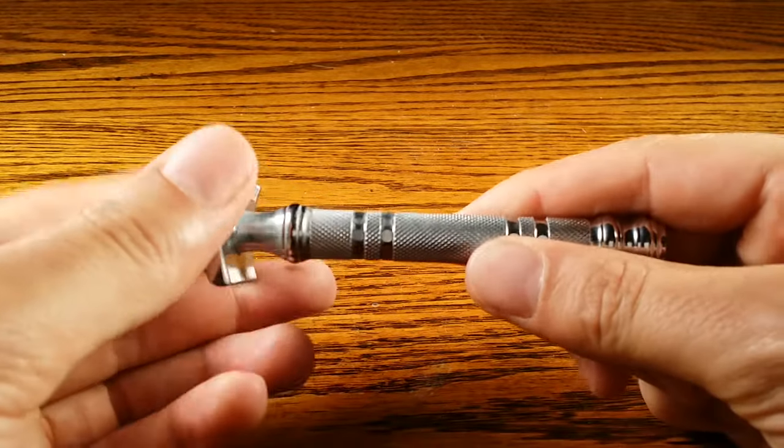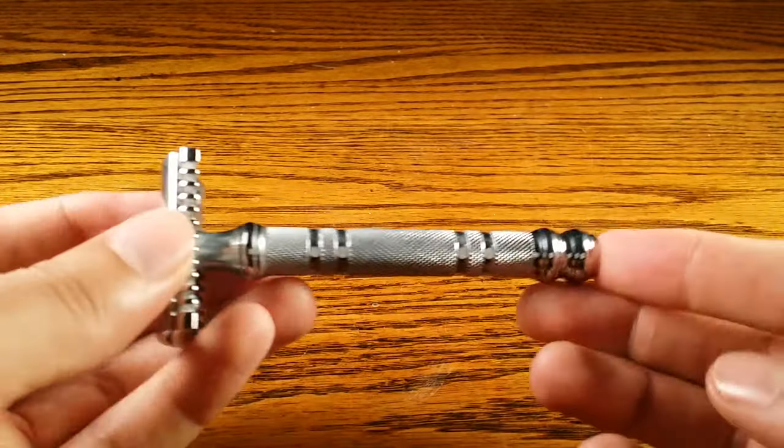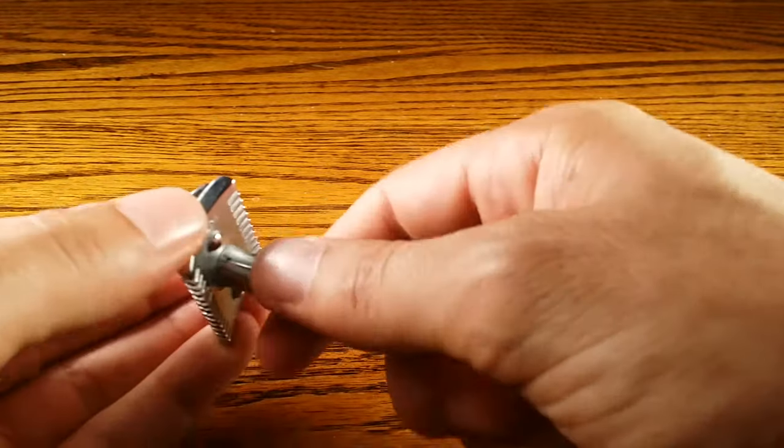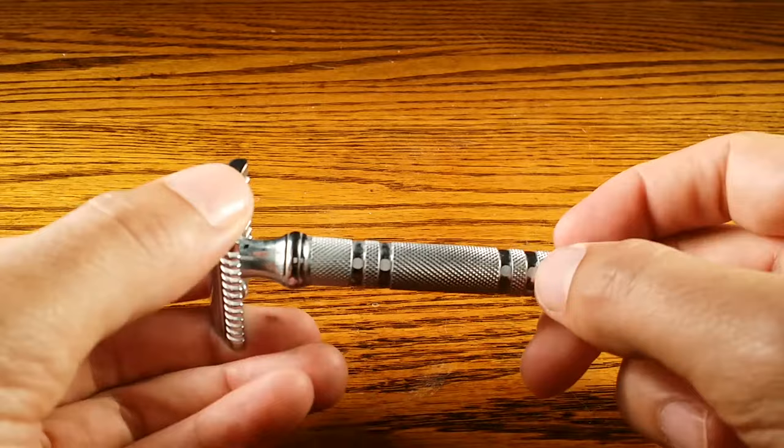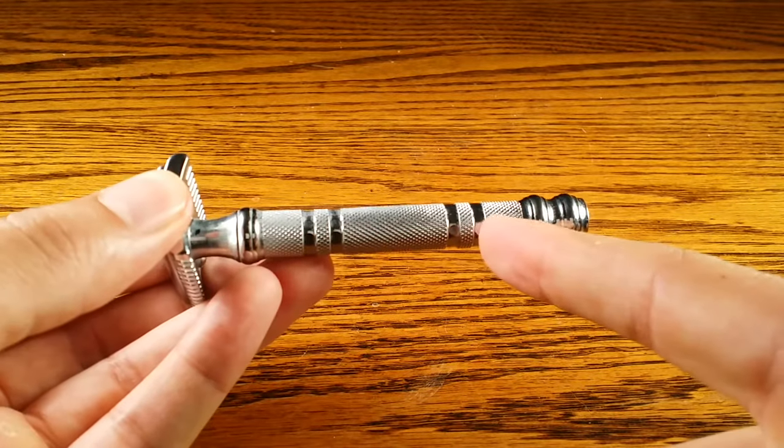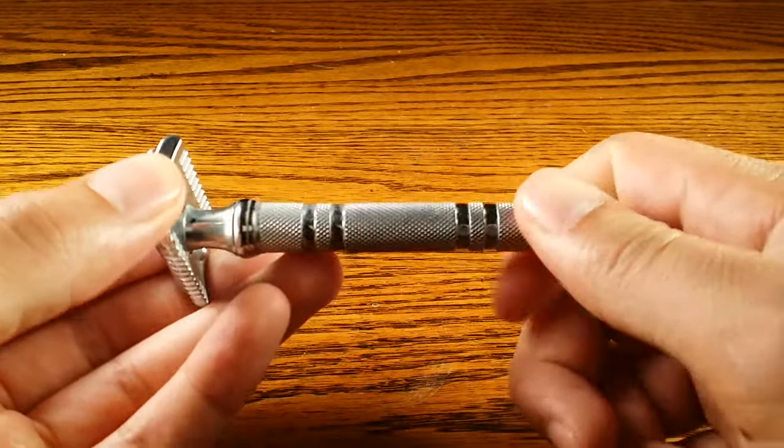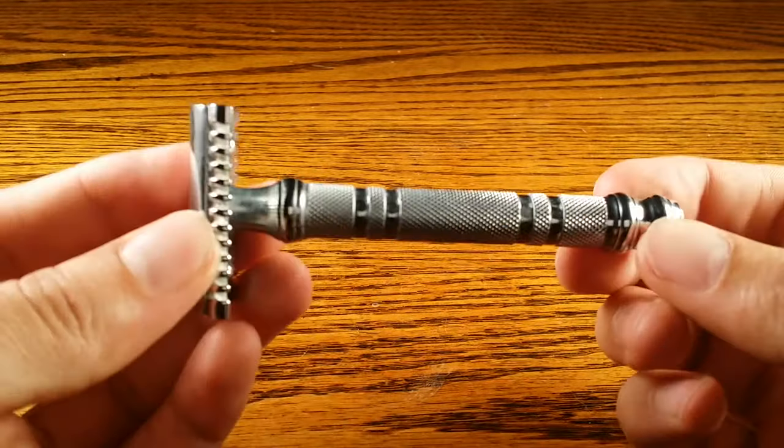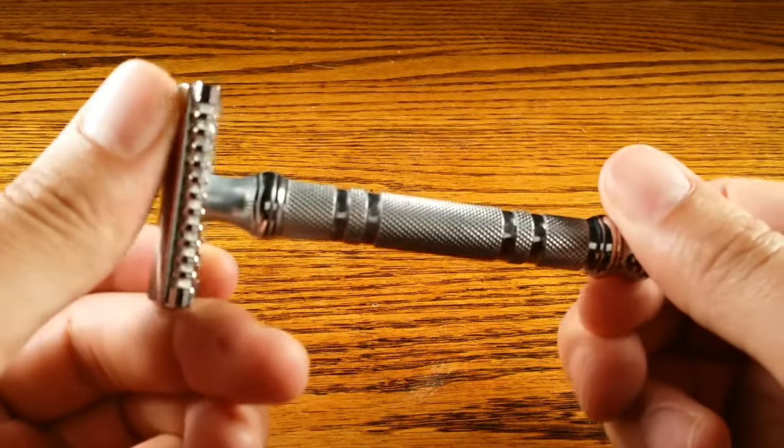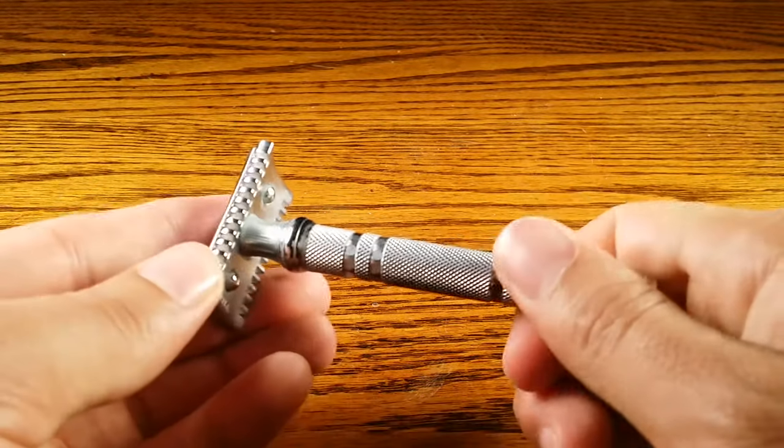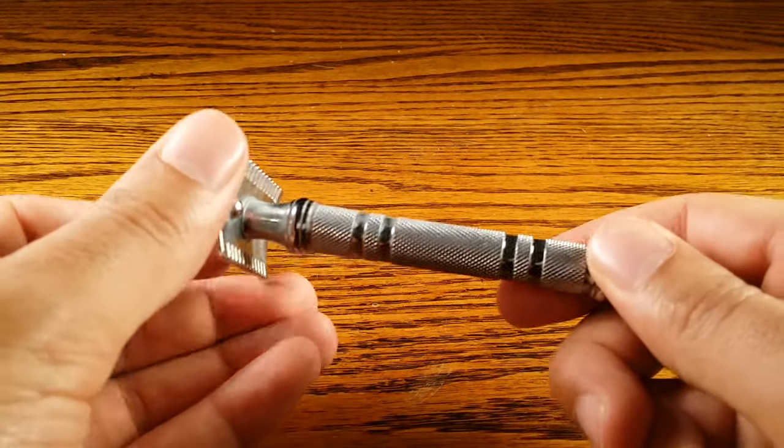It comes in at four inches long, and for me, that is a perfect length because I have fairly larger hands. The Merkur 34C probably comes down to there, and that's a little too short for me. But this four inch length is just about perfect for me. If you have larger hands, I suggest getting something that is closer to four inches long.